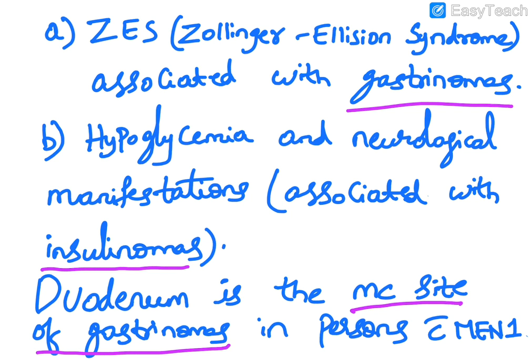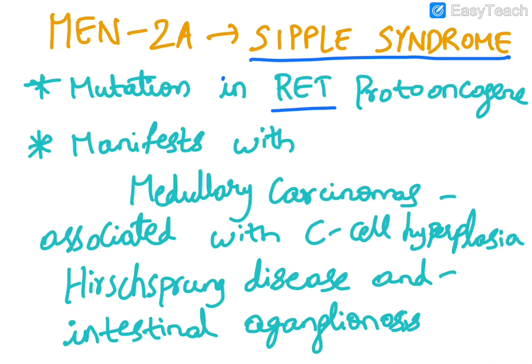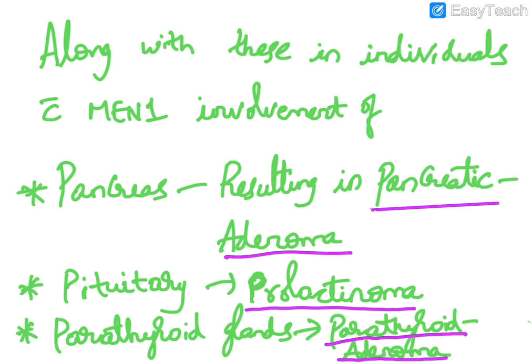Zollinger-Ellison syndrome is associated with gastrinomas. Hypoglycemia and neurological manifestations are associated with insulinomas. Remember, the duodenum is the most common site of gastrinomas in patients with MEN1 syndrome.